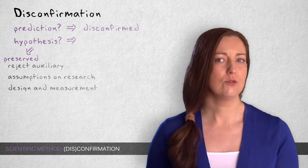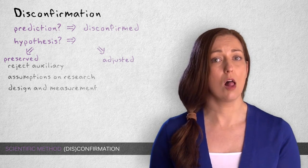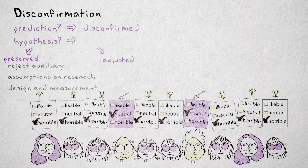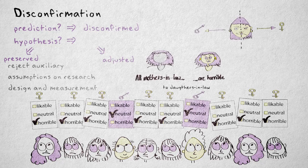Sometimes results do give rise to a modification of the hypothesis. Suppose that the eight colleagues who did have horrible mothers-in-law were all women and the other two were men. Perhaps all mothers-in-law are indeed horrible, but only to their daughters-in-law.